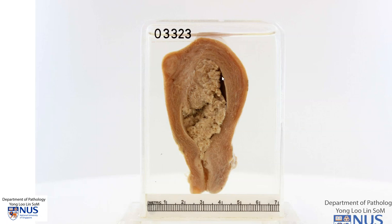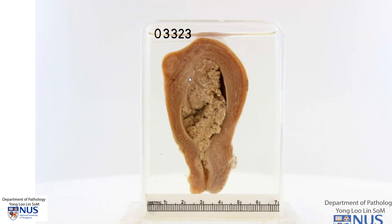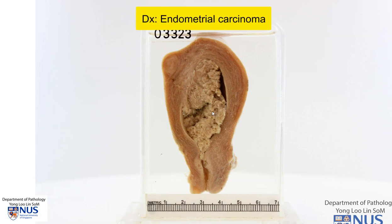The main pathology is this large friable yellowish mass that is expanding the endometrial cavity. We can see that this mass arises in the superior part of the uterine body and appears to arise from the endometrium. More importantly, we can see that there is a suggestion that this mass actually invades into the myometrium. This is a case of endometrial carcinoma of the uterus, a primary malignancy that arises in the endometrial layer.